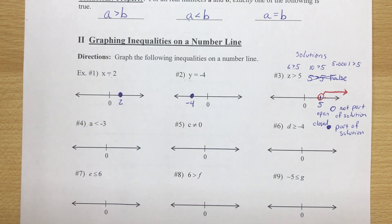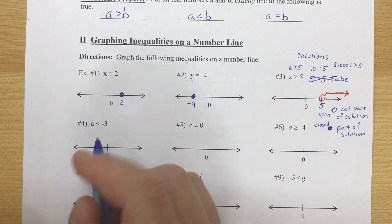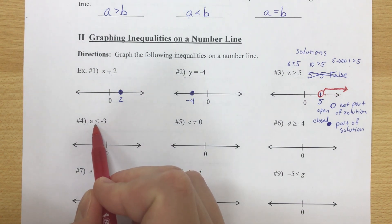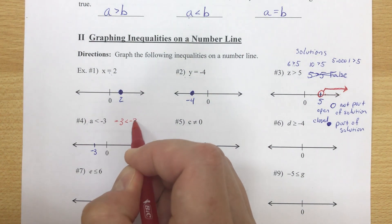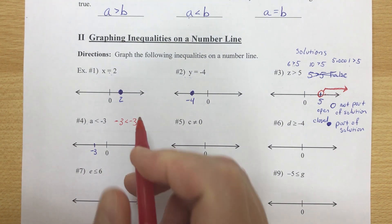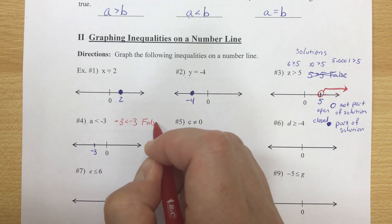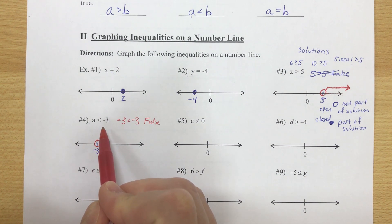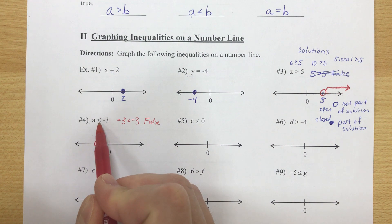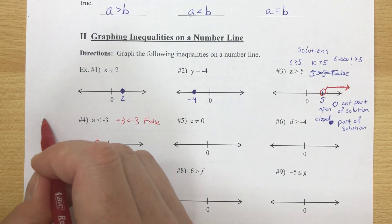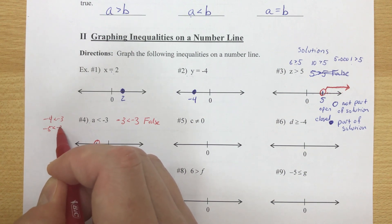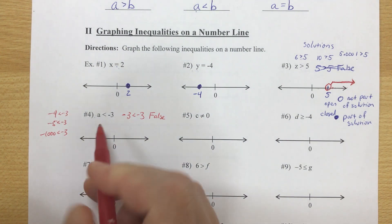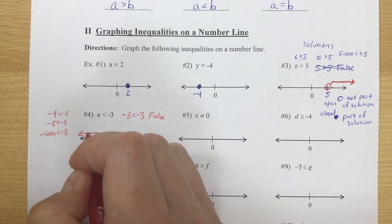For a is less than negative 3: plot negative 3 to the left of 0. Is negative 3 less than itself? No — that's false. So this is an open circle. Where are all values less than negative 3? Negative 4, negative 5, negative 1000 — those are all less than negative 3. So I draw my arrow to the left.